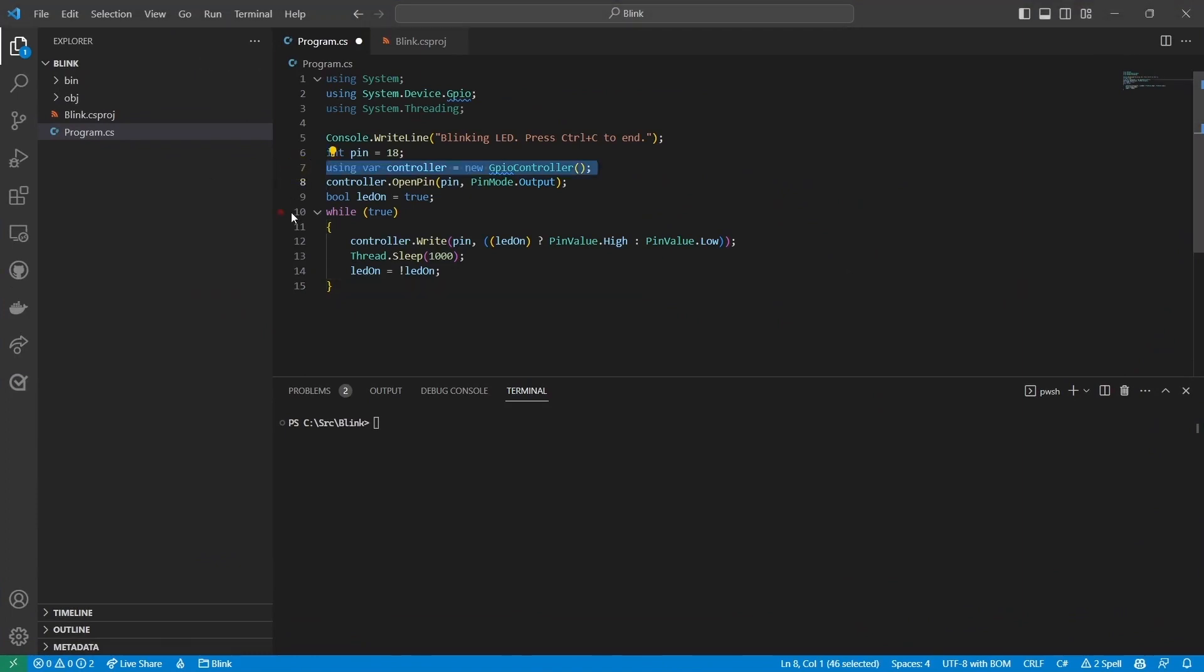This using declaration creates an instance of the GPIO controller class. This class is used to interact with the GPIO header. A using declaration ensures that the instance is disposed of when the program exits.